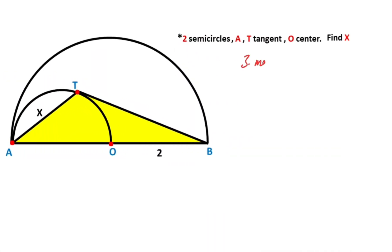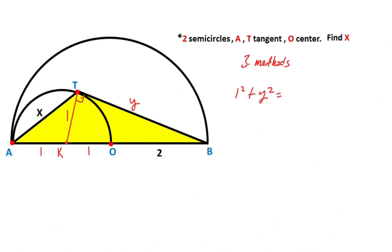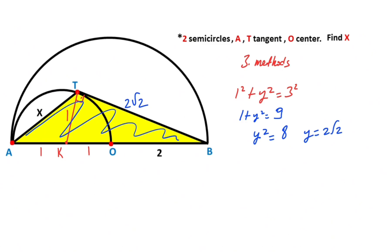Now we will calculate the value of x using the third method. Let's call point K again as the center of the small semicircle and connect these two points. These are 1 unit because of the radius, and here is 90 degrees because of the tangent. Let's call this segment y. For this triangle, if we apply the Pythagorean theorem: 1² plus y² equals 3², so 1 plus y² equals 9, meaning y² equals 8, so y equals 2√2.